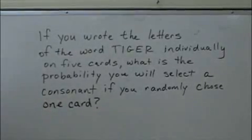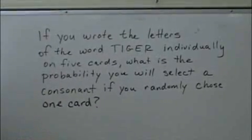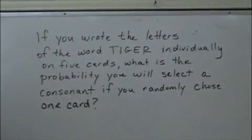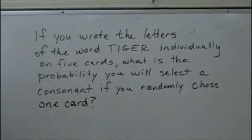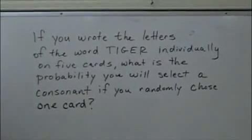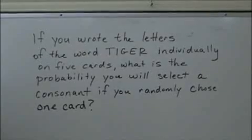Hi everybody. The question at hand says, if you wrote the letters of the word TIGER individually on five cards, what is the probability you will select a consonant if you randomly choose one card?